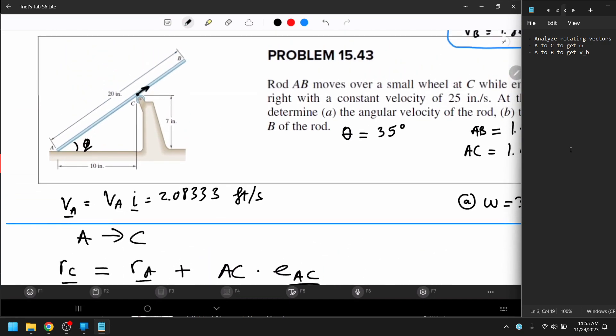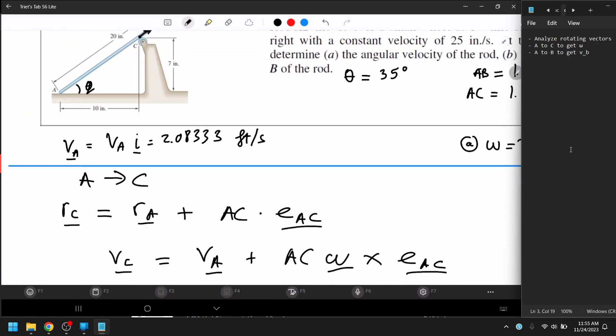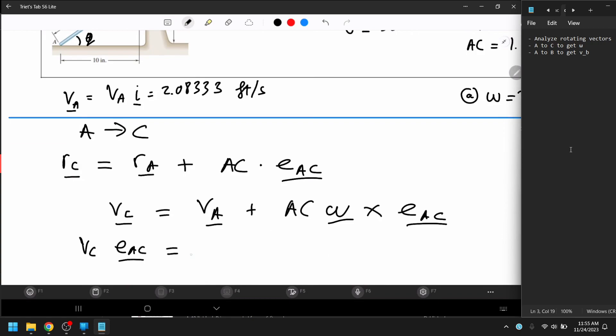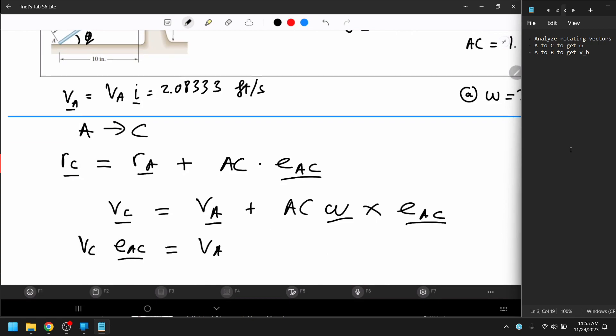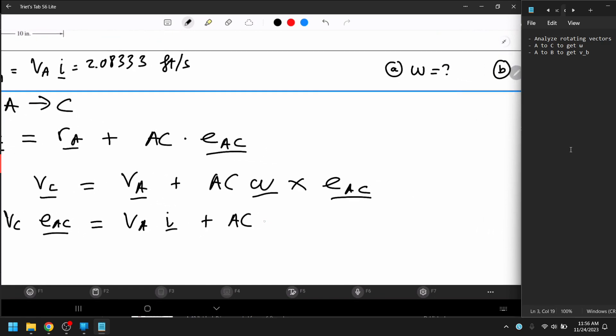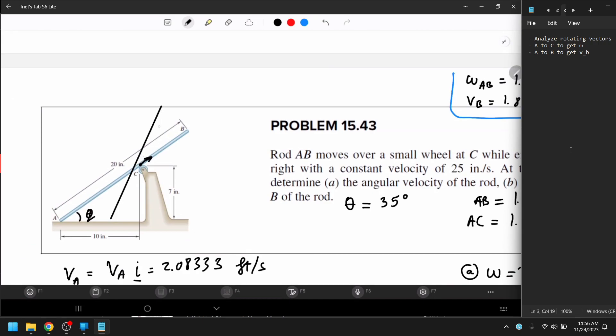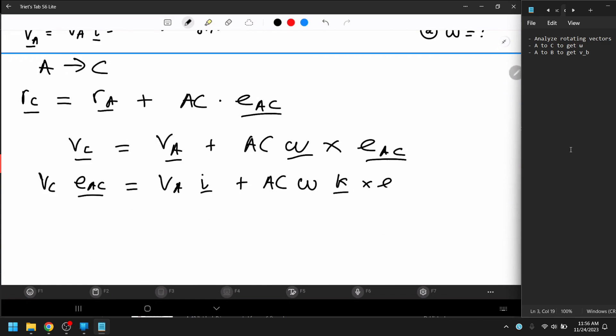And with that, we can analyze this V_C. V_C is going to become, the magnitude of V_C, and then times E_AC, equal to the V_A, you just broke it down to the component, V_A i, plus AC omega, and then the direction of omega. Remember, the next moment is going to be like this. And then, that's the next moment. So, it's going to rotate this way. That's going to be k counter-clockwise, that's going to be positive k, cross with E_AC.